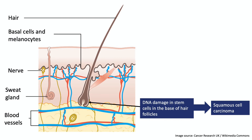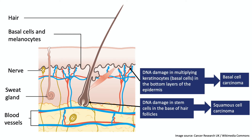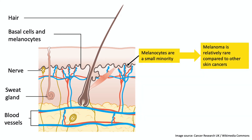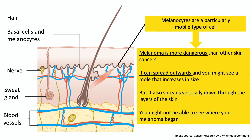There are two forms of skin cancer that are much more common and less dangerous than melanoma skin cancer. One is squamous cell carcinoma, which develops from faulty stem cells in the base of hair follicles. The other less dangerous type is basal cell carcinoma, which develops from multiplying keratinocytes called basal cells, found in the bottom layers of the epidermis. Melanomas develop from melanocytes that live amongst the basal cells. Because less than one in a hundred cells in our skin are melanocytes, melanomas are much rarer than the other skin cancers. However, even normal healthy melanocytes are cells with a desire to move, so if a melanocyte becomes a cancer cell, it creates a cancer that's more likely to be disruptive and more likely to spread.